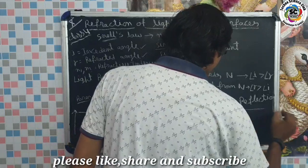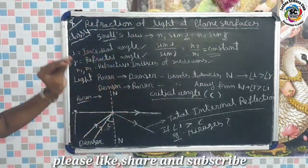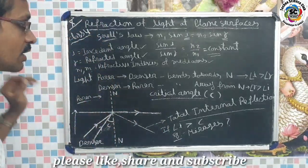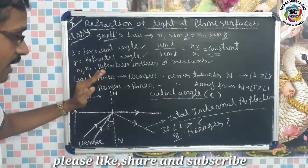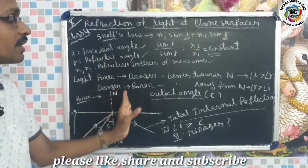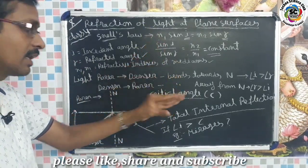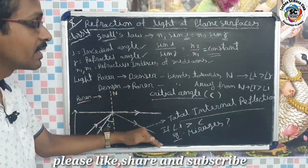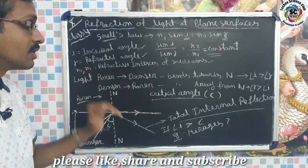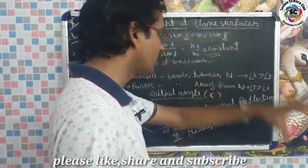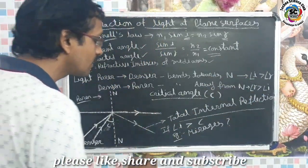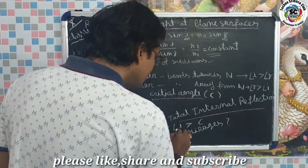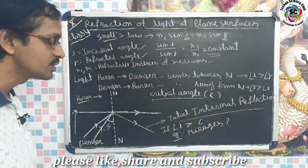Total internal reflection is a phenomenon where a ray traveling from a denser medium to a rarer medium strikes the surface with an angle greater than the critical angle, causing the ray to be reflected completely back into the original medium. This phenomenon is called total internal reflection. It occurs when the incident angle i is greater than the critical angle C.